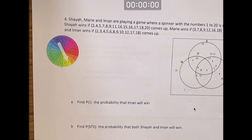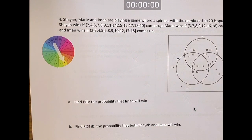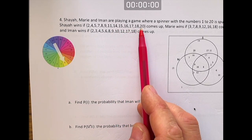Question number four. Shea, Marie, and Iman are playing a game where a spinner with the numbers 1 to 20 is spun. Shea wins if 2, 4, 5, 7, 8, 9, 11, 14, 15, 16, 17, 18, or 20 comes up.